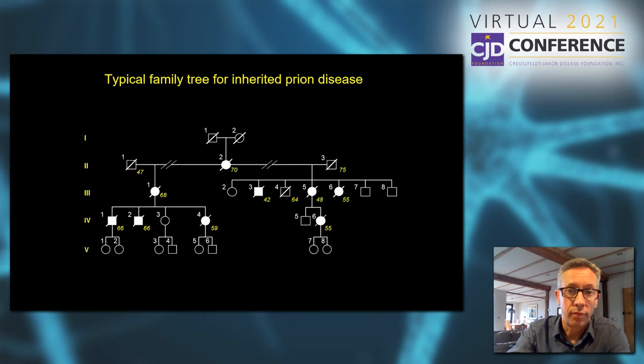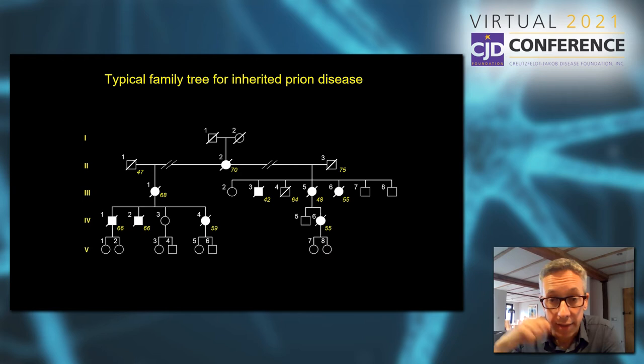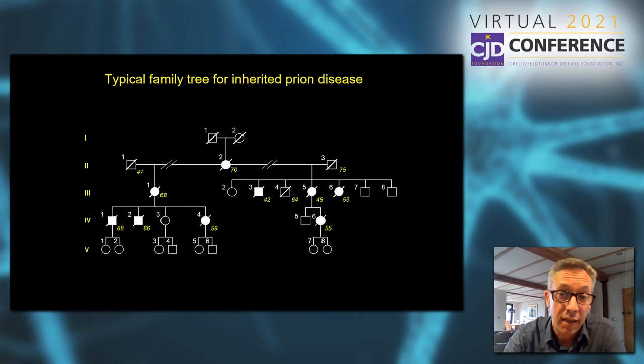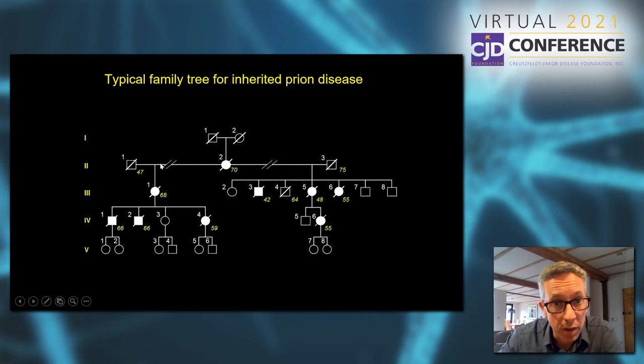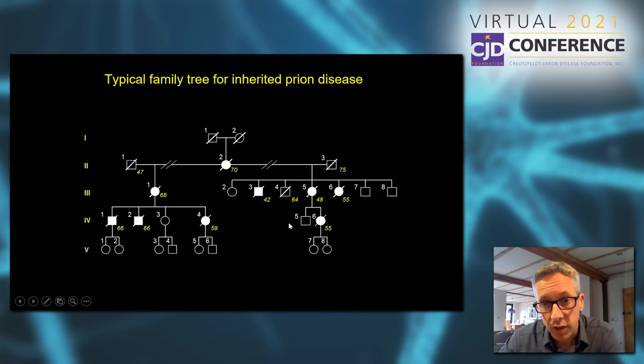A typical family tree looks like this, with Roman numerals on the left referring to different generations, circles referring to females and squares to males, with vertical lines connecting to children. In the inherited prion diseases, they're transmitted as what's called an autosomal dominant trait, meaning the risk for each generation is 50% of inheriting the mutation. In this example, a mother in generation three had eight children by two different men, and four of those children did eventually develop the disease and die from it, while four were unaffected. It's only those affected individuals that can pass on the mutation to their children.